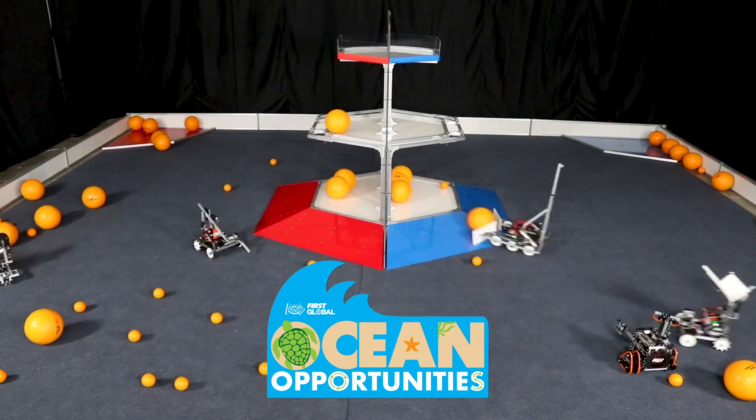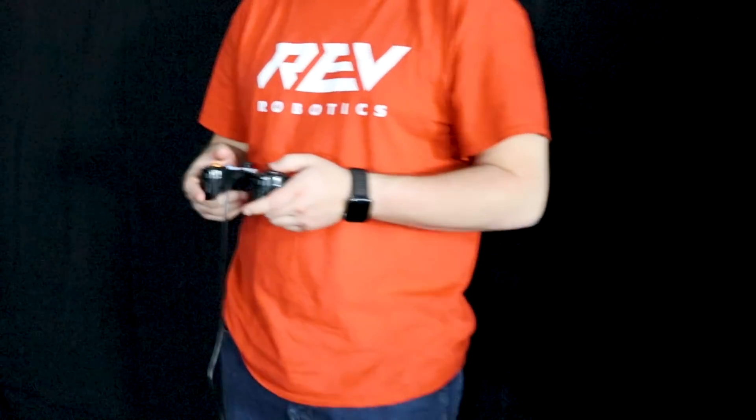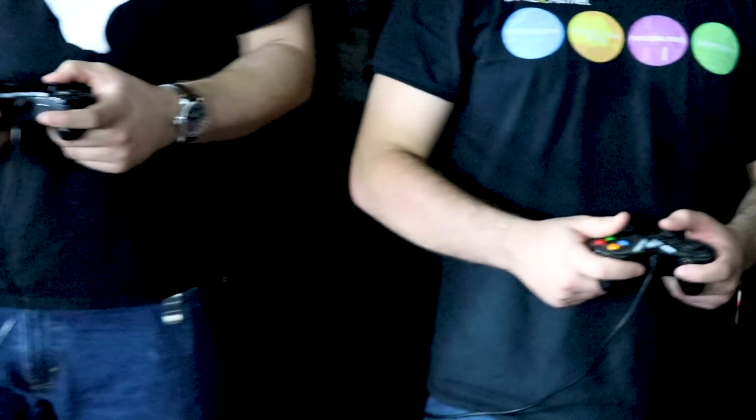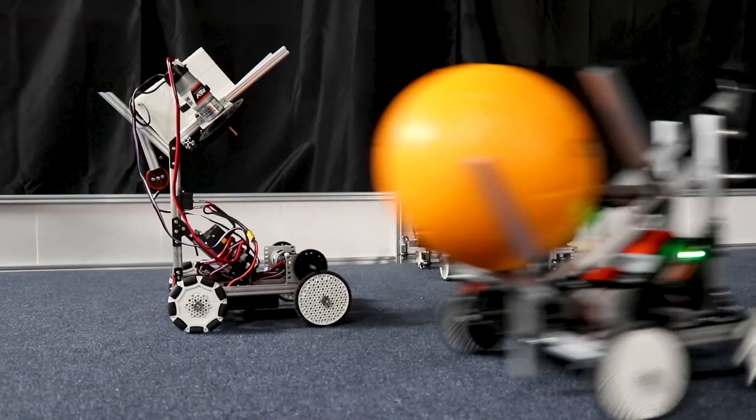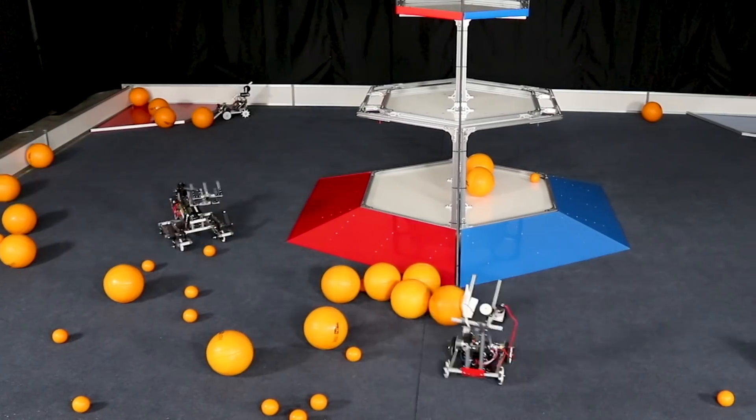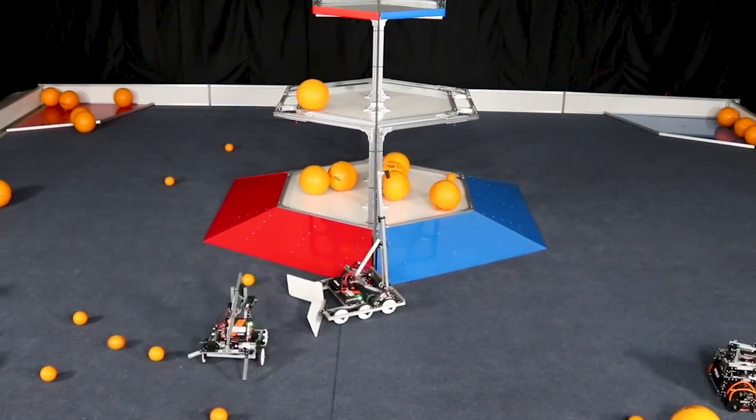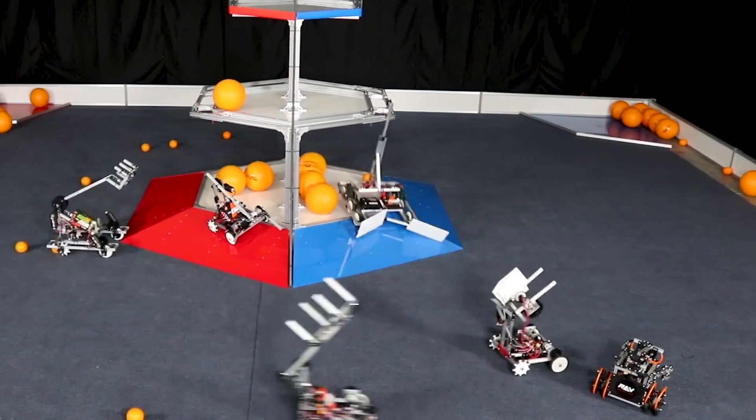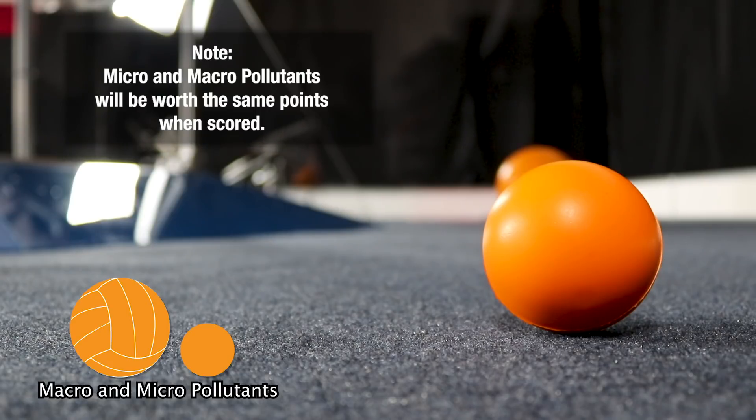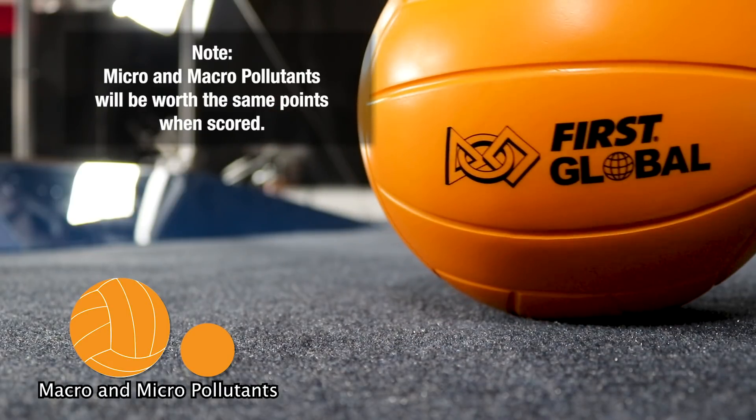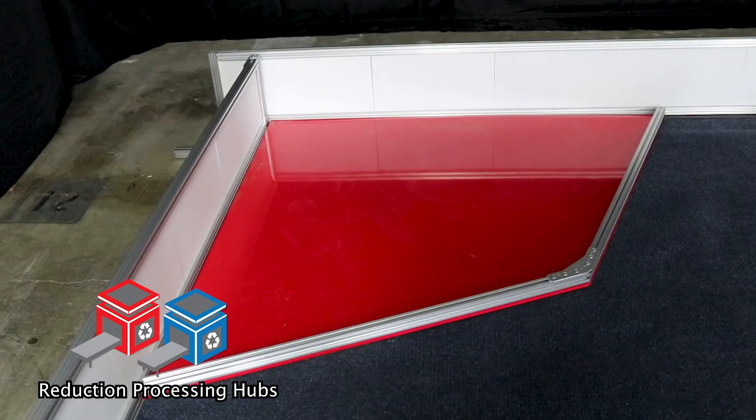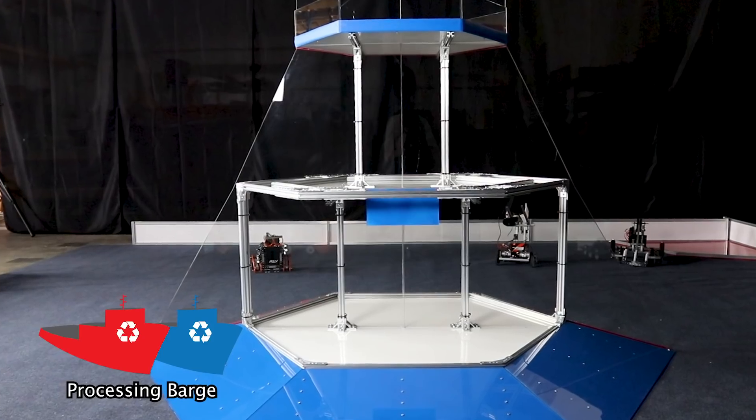In this game, two alliances, also known as cleanup crews, each comprised of three nation teams, will compete and cooperate to clean the ocean of pollutants via processors. Throughout the match, cleanup crews will interact with 30 micropollutants and 50 macropollutants, in addition to their own reduction processing hubs and the processing barge.